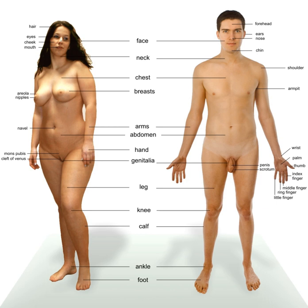The sex of a particular organism may be determined by a number of factors. These may be genetic or environmental, or may naturally change during the course of an organism's life. Although most species with male and female sexes have individuals that are either male or female, hermaphroditic animals, such as worms, have both male and female reproductive organs.